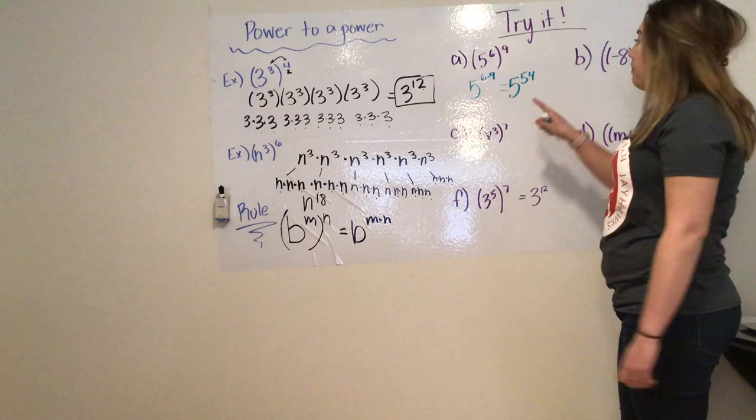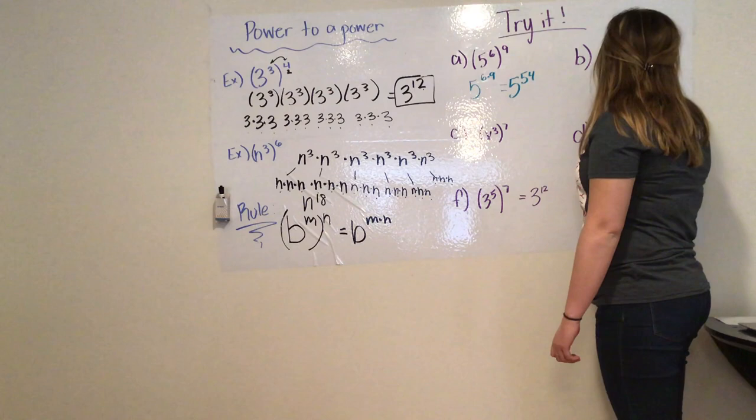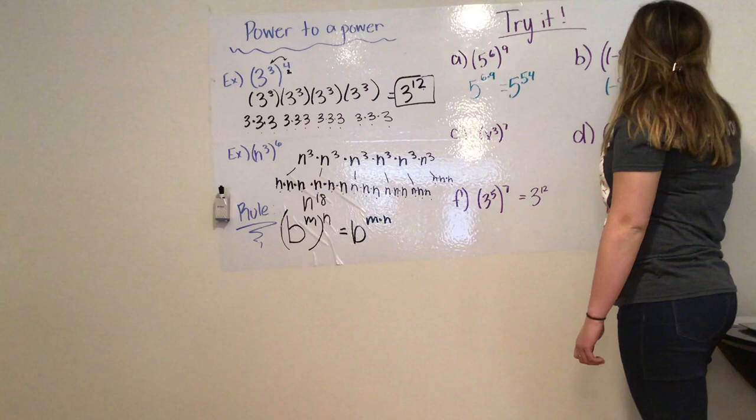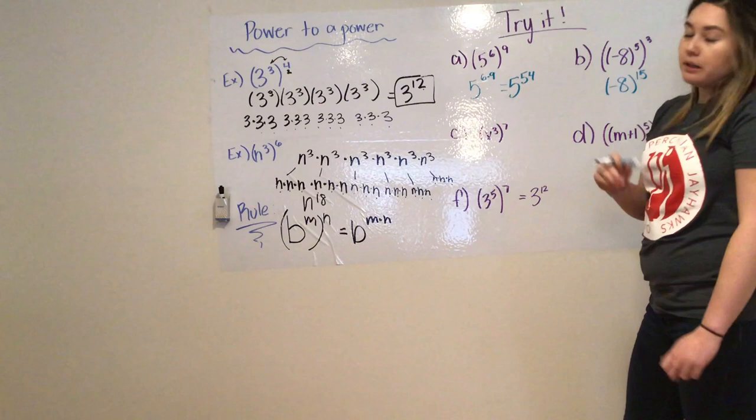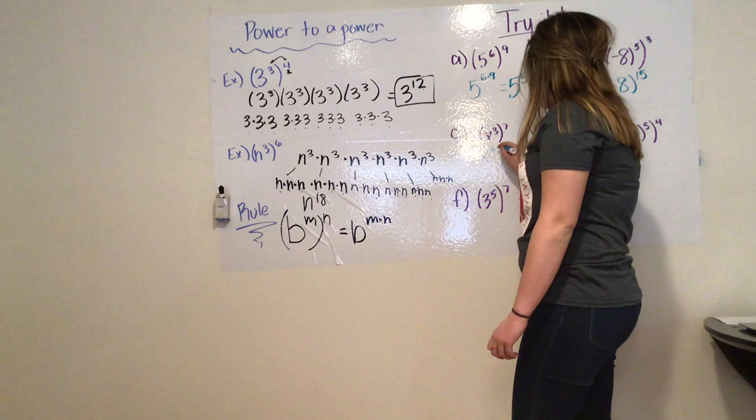With b, same thing, we're containing the negative, so it's negative 8 to the power of 5 times 3, which is 15. Same thing with variables, we've been doing it before. So, x to the 3 times 7 gives me x to the 21st power.